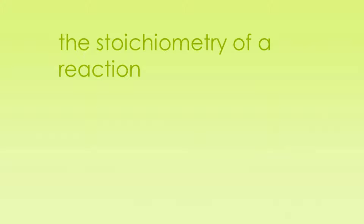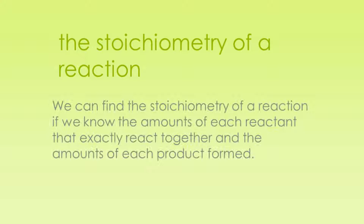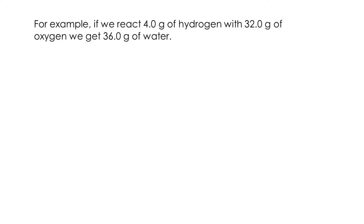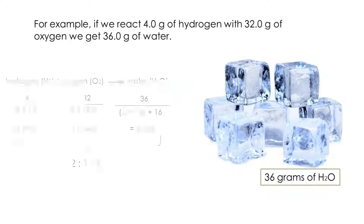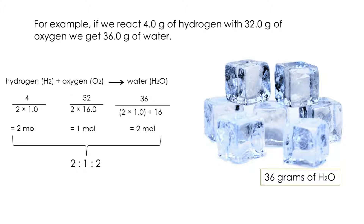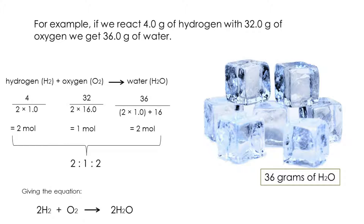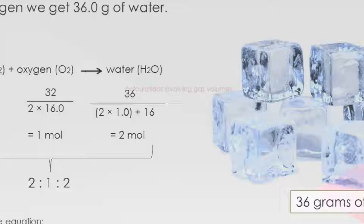Now let's talk about the stoichiometry of a reaction. We can find the stoichiometry of a reaction if we know the amounts of each reactant that exactly react together and the amounts of each product formed. For example, if we react 4 grams of hydrogen with 32 grams of oxygen, we get 36 grams of water. Using atomic masses, we get the ratio 2:1:2. This ratio is the ratio of stoichiometric numbers in the equation: 2H₂ + O₂ → 2H₂O.